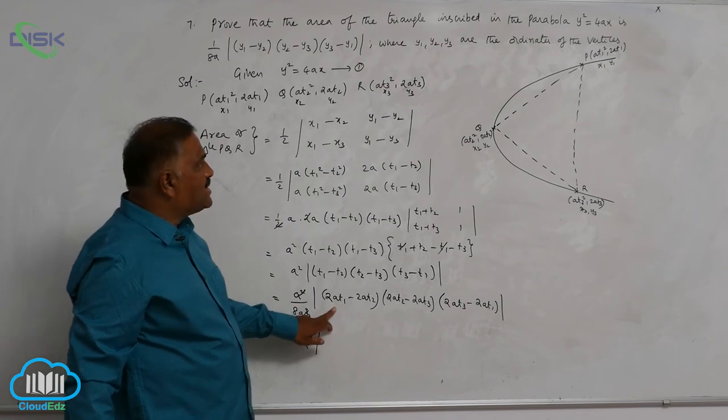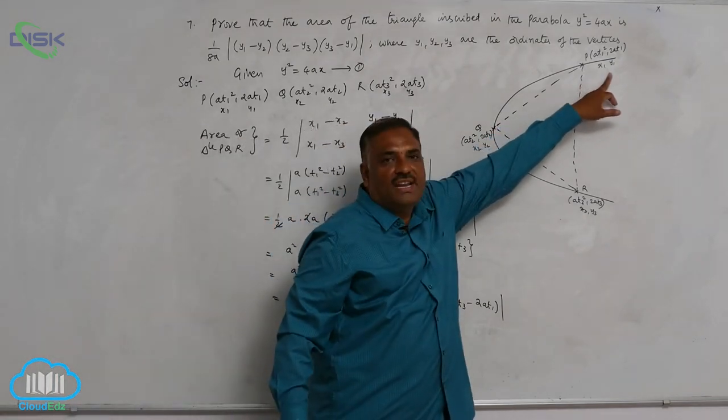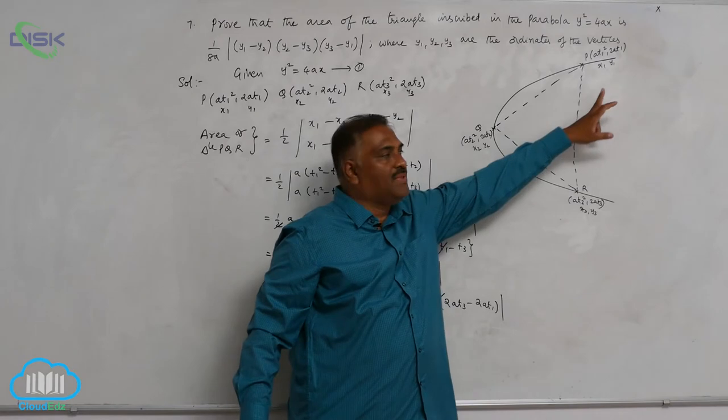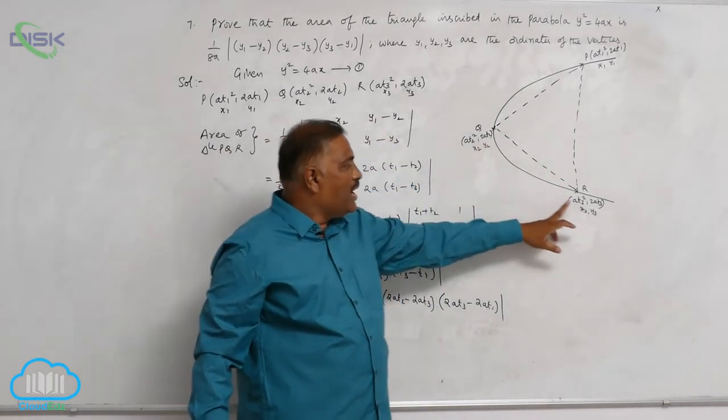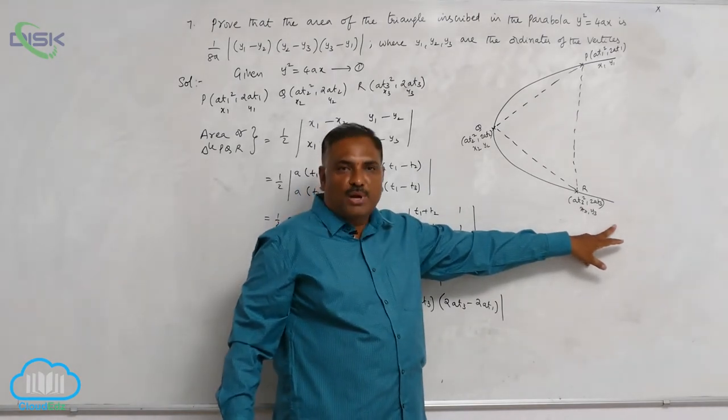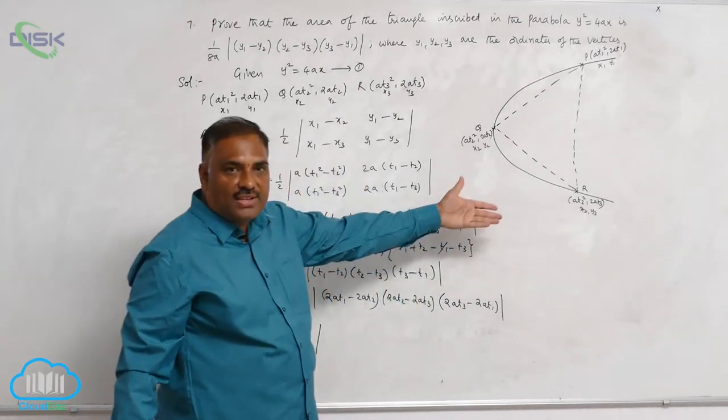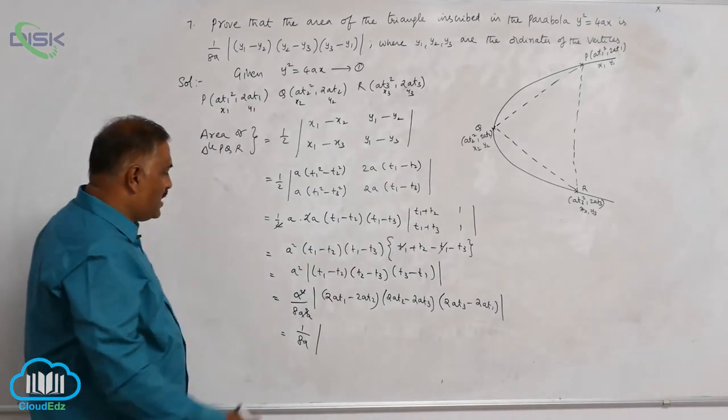now, 2at₁ is the corresponding y coordinate of point number 1. 2at₂ is the corresponding y coordinate of point number 2. 2at₃ is the corresponding coordinate of y₃, point number 3.